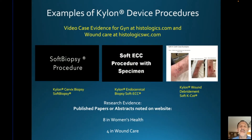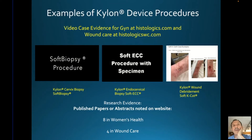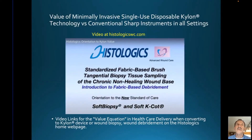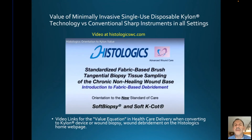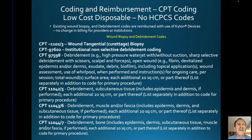We've got plenty on our website — both on histologics.com and histologicswc.com — with published papers and abstracts. There are eight in women's health and four in wound care. We were privileged to give a presentation to the Pentagon a couple of years ago about limb salvage and doing great debridements, trying to save limbs. There's another video presentation like this on our website homepage, about 16 to 18 minutes, chopped up into segments for billing and coding or other reminders, devised by Dr. Jeffrey Lehrman.